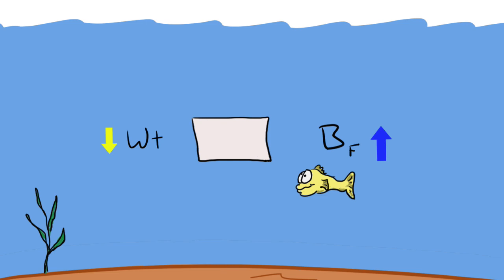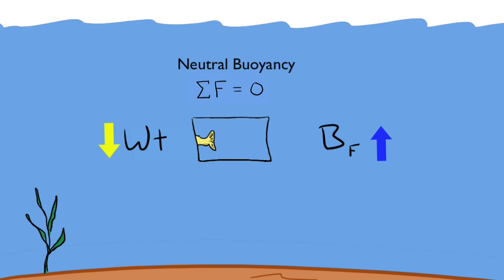Let's fill the entire box with water. Aha! Here, we have a special case where the weight and the buoyant force are equal and opposite. So the box hovers in equilibrium. We call this neutral buoyancy.